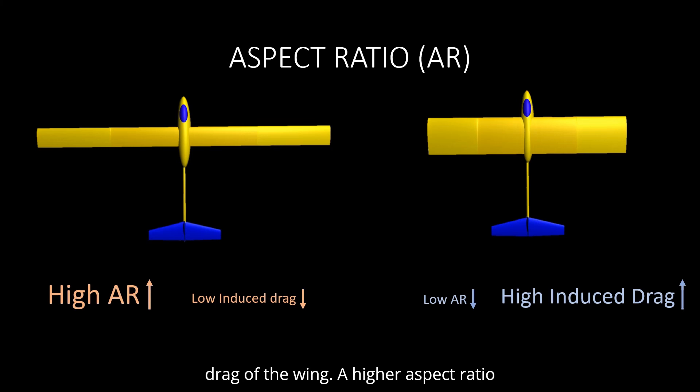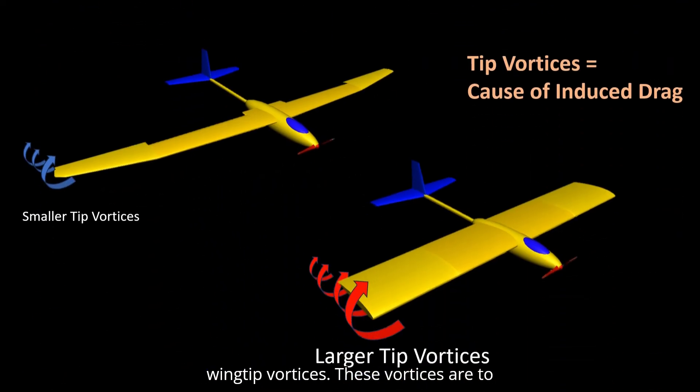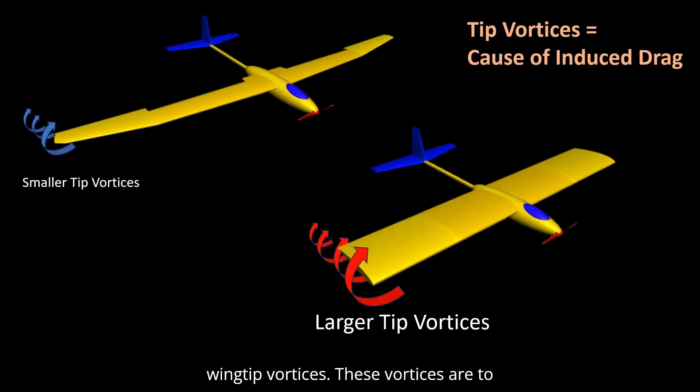A higher aspect ratio wing means that there will be lower induced drag, or drag due to lift. Narrower cord corresponds to smaller wingtip vortices. These vortices are to be avoided as these are the cause of induced drag.